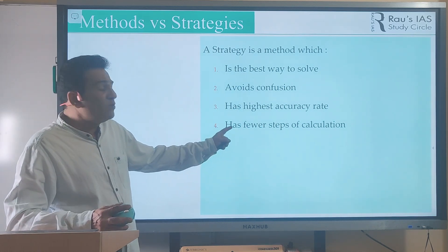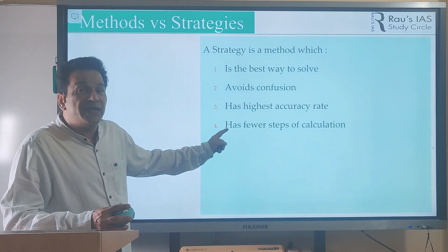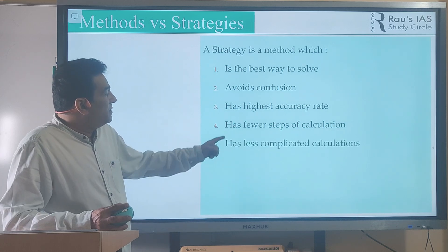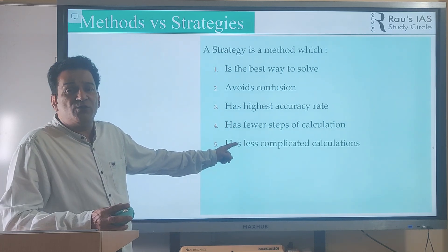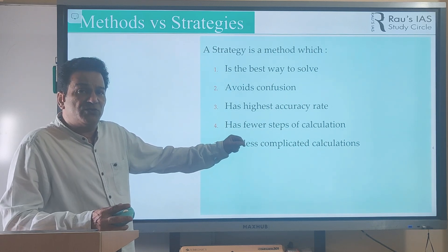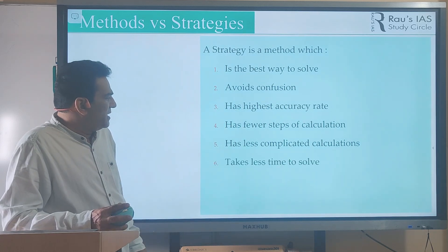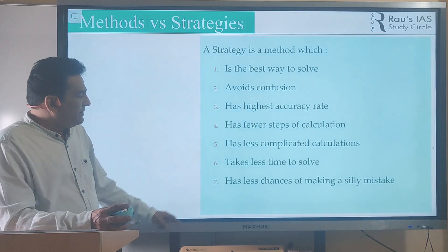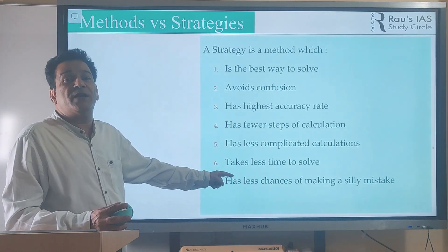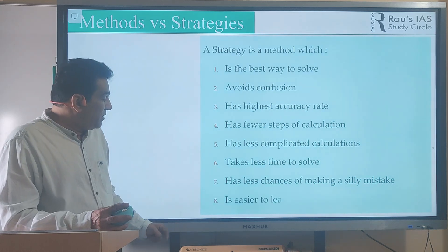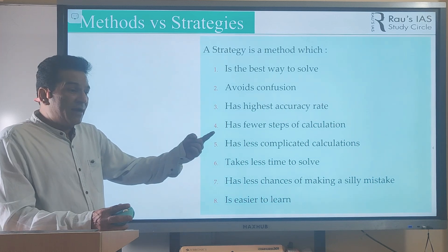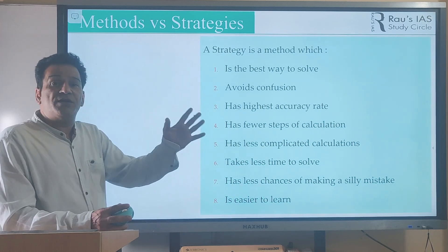If you are using fewer steps of calculation, then automatically it is going to take less amount of time — so both advantages are there. Moreover, the calculations used in a strategy need to be less complicated, so that the chances of making mistakes are also on the lower side. It takes less time and there is less chance of making a silly mistake. A strategy is also a method which is easier for you to learn, and then you practice it on a certain number of questions, perfect it, and do not deviate from it.